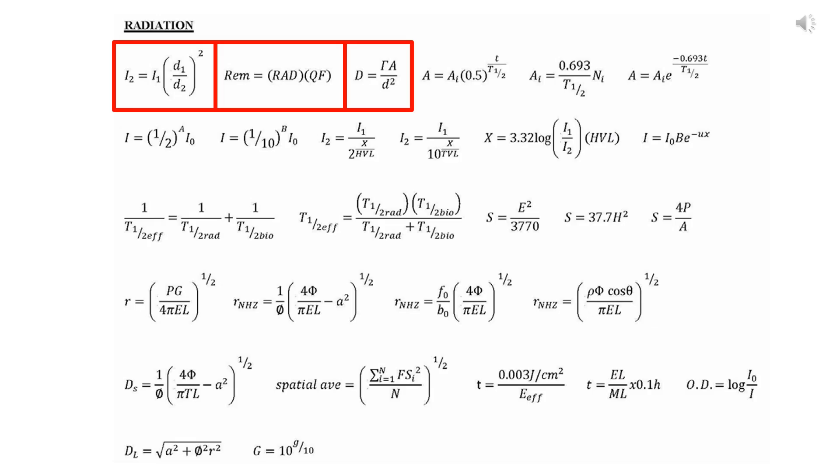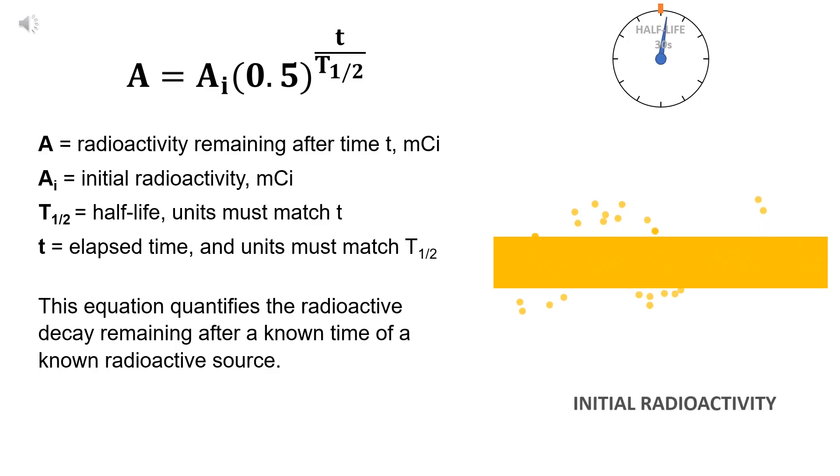Now let's go to the fourth equation. This equation quantifies the radioactive decay remaining after a known time of a known radioactive source. As you can see in the animation and in the equation, we have the initial radioactivity, which is measured in millicuries, that decays half the initial value every half-life. The half-life for our animation is 30 seconds.